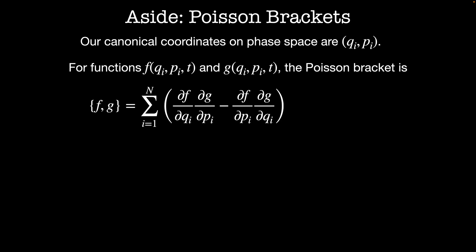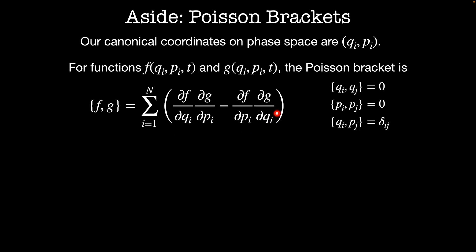We can take the Poisson bracket of any functions we'd like, but we'll start with the simplest functions q and p. The Poisson bracket of qi and qj is zero, since neither depends on pi, so both derivatives are zero. Likewise, the Poisson bracket of pi with pj is also equal to zero. The only term that survives the Poisson bracket of qi with pj is dqi/dqi times dpi/dpi, and the other term is zero. So we get one when i equals j and zero otherwise, which we can write compactly using the Kronecker delta. This last statement — that the Poisson bracket of qi with pj equals delta_ij — is the definition of qi and pj being conjugate coordinates.